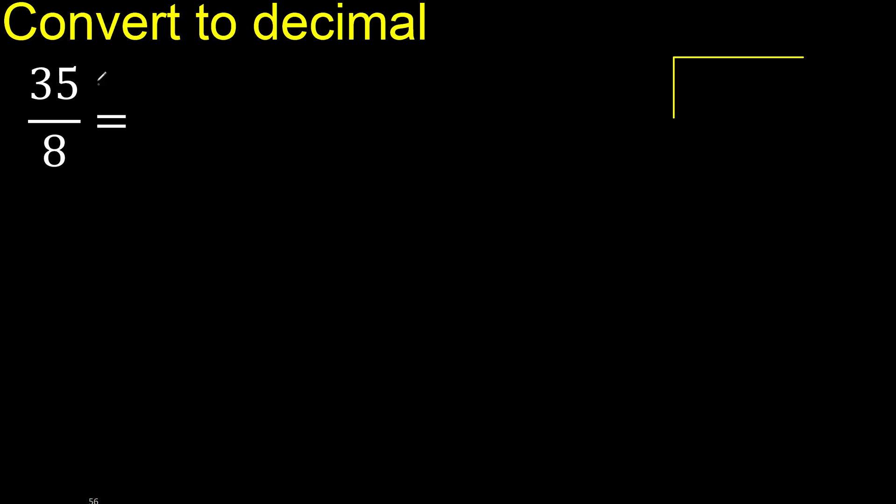35 divided by 8. 3 is less, therefore next. 5. 35 is not less, therefore with 35. 8, multiply by which number is nearest to 35?